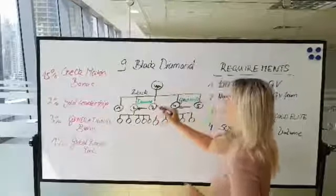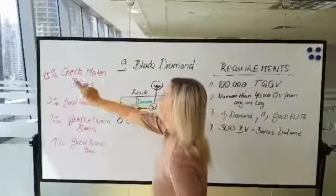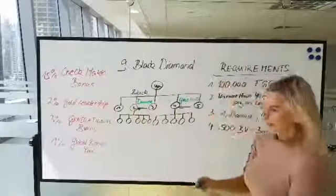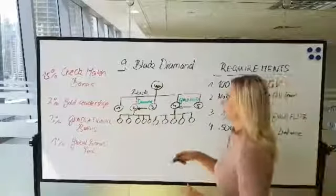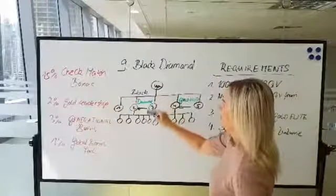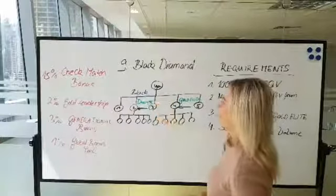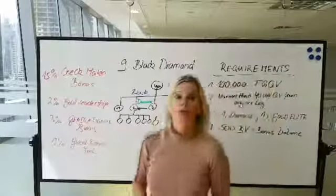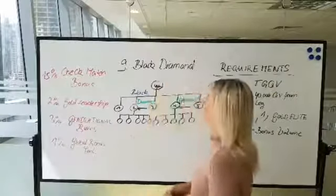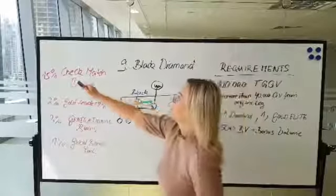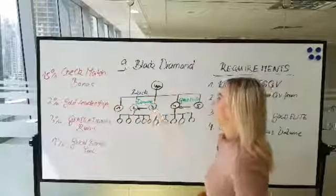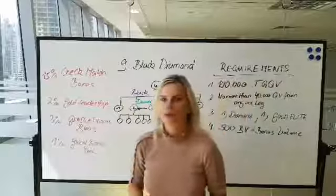So if this person becomes a black diamond, well you can actually match their bonus check by 15 percent. So that means if this person here, the black diamond, makes 20,000 euros in the uni-level commissions, then you're going to get 15 percent of the 20,000 euros which he makes in the uni-level commissions.